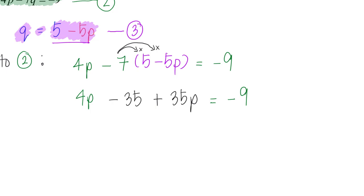The next step is to simplify, so I will have 39P here. Do I plus or minus 35? Yes, I plus 35 on both sides so that this becomes zero. So I add 35 on both sides and eventually you will get this.